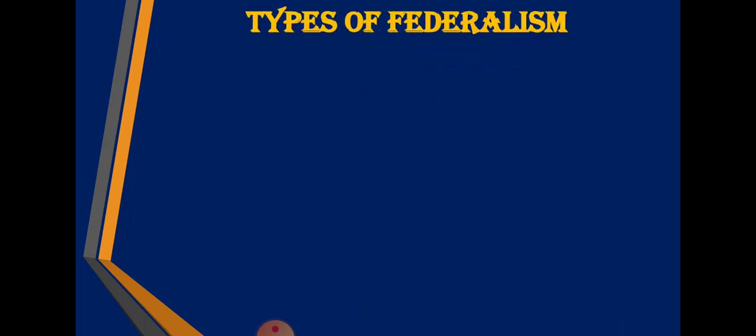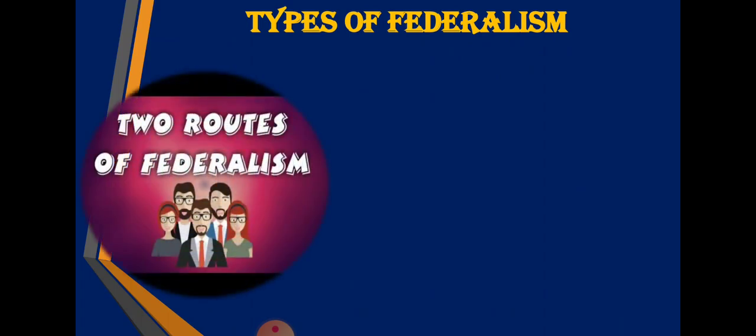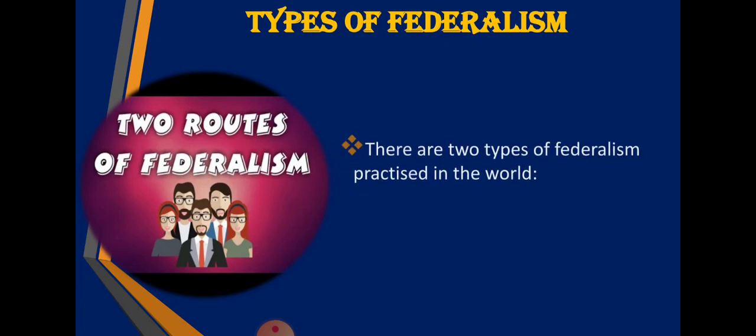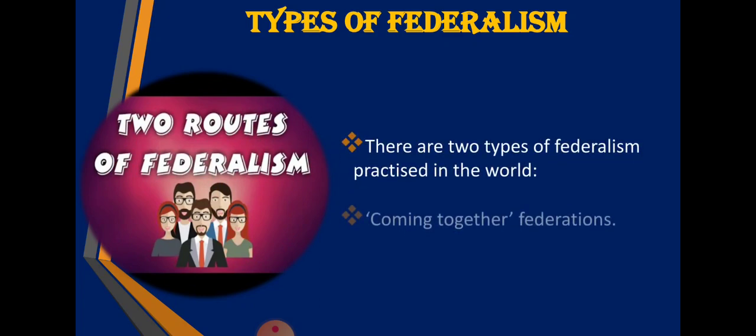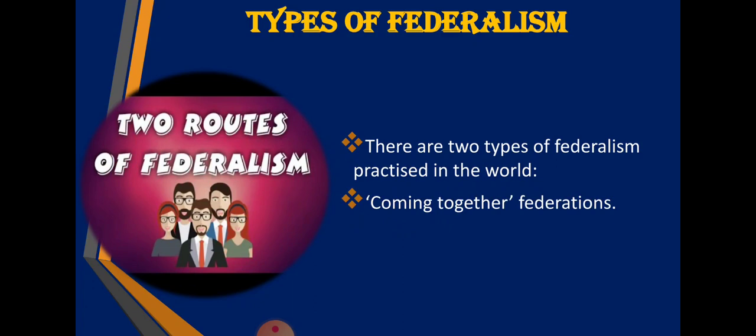After learning what federalism is, its important features, and its important aspects, we come to the types of federalism. There are two main types that are followed in many countries of the world. These are: coming together federations and holding together federations. Let us see what are the features of each type.